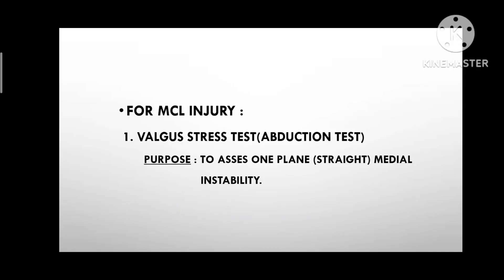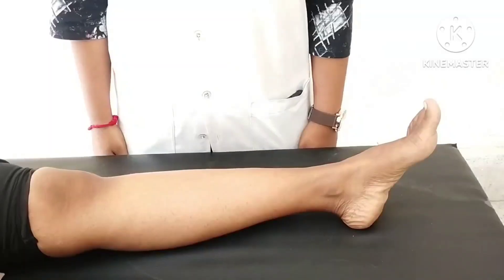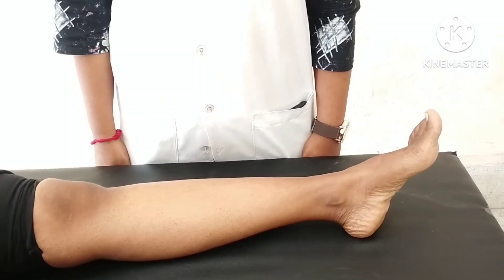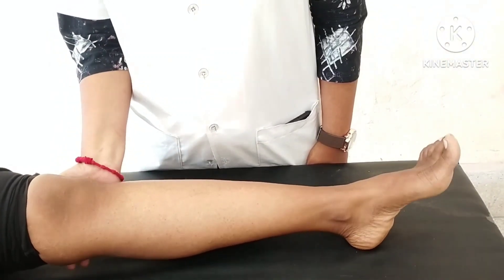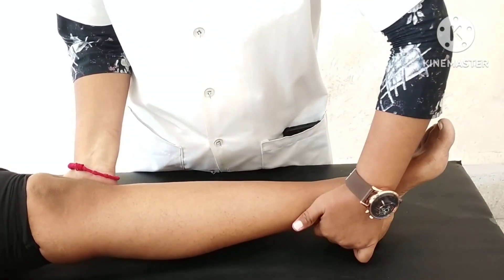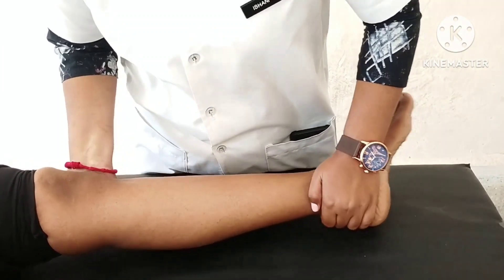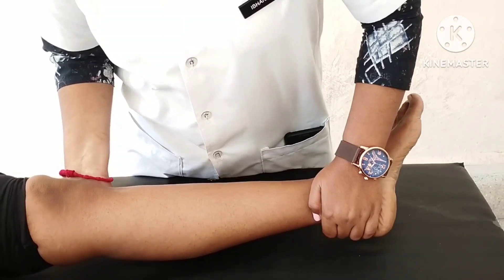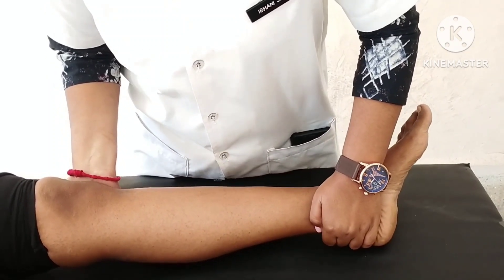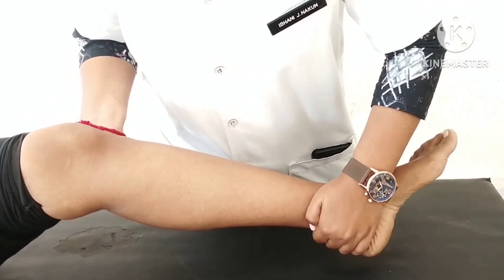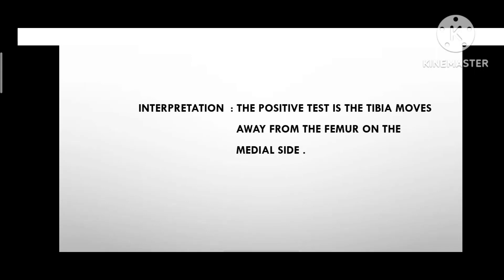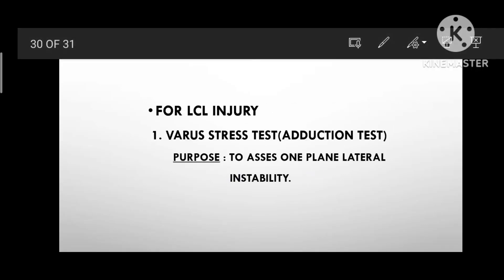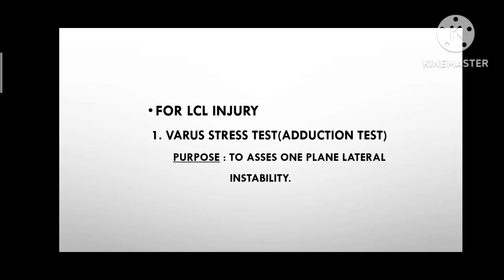For MCL Injury: Valgus Stress Test / Abduction Test. Purpose: to assess one plane medial instability. Patient Position: supine lying with knee in full extension. Therapist Position: standing with one hand over the lateral knee joint line and the other hand stabilizing the ankle in slight lateral rotation. The examiner applies a valgus stress at the knee, pushing the knee medially. Consequently, perform these tests also with knee at 20-30 degrees flexion. Interpretation: the test is positive if the tibia moves away from the femur on the medial side.